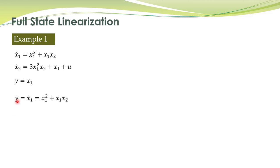To compute the relative degree, we take the derivative of output with respect to time. y dot is equal to x1 dot, which is equal to this thing. Since u, the control input, is not appearing here, we need to compute the second derivative.